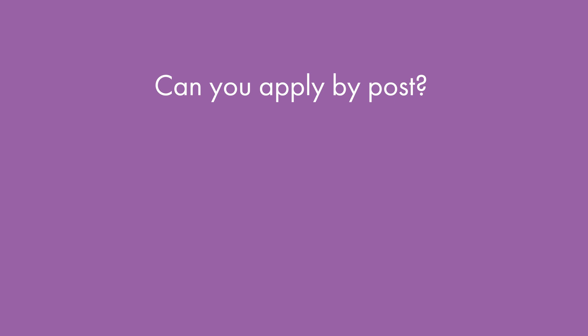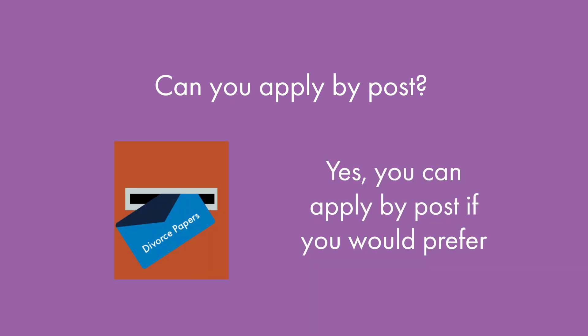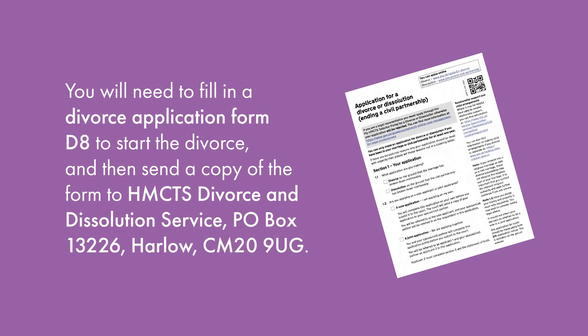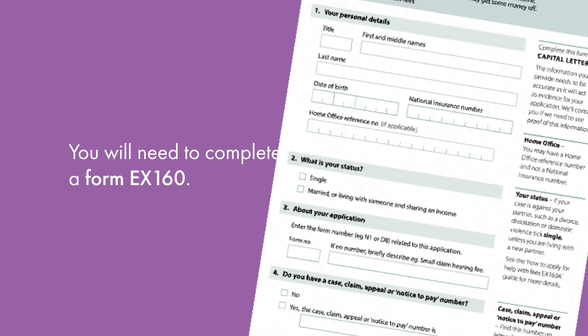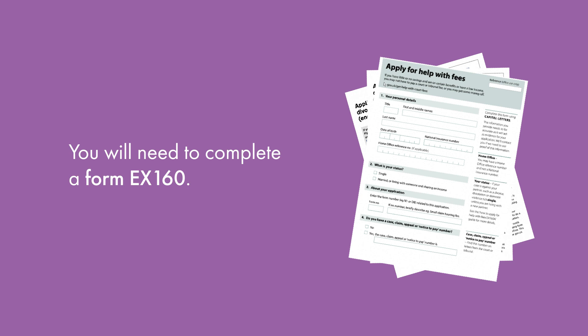Can you apply by post? The easiest way to apply for a divorce is via the online service; however, you can apply by post if you would prefer. You will need to fill in a divorce application form D8 to start the divorce, and then send a copy of the form to HMCTS Divorce and Dissolution Service at PO Box 13226, Harlow, CM20 9UG. If you do apply by post, we recommend you keep your own copy of the form before posting it. You can also apply for help with fees by completing form EX160. You should send your divorce application and help with fees application to the court at the same time.